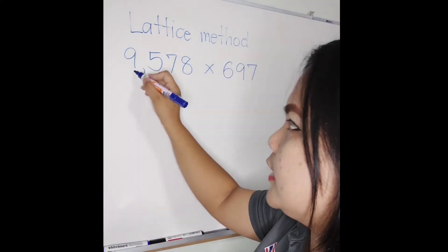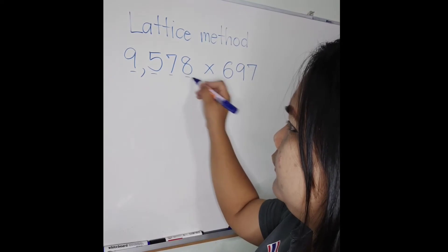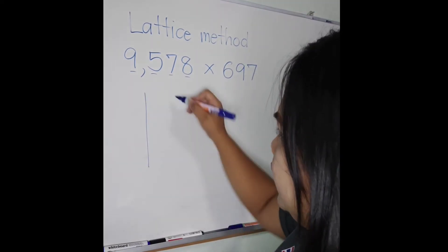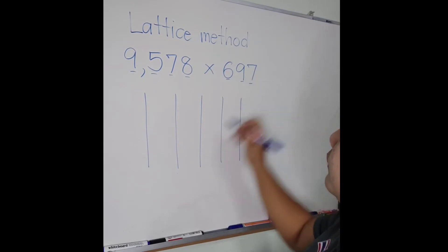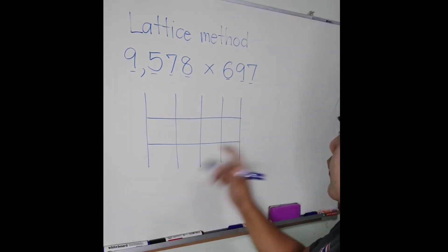Let's count: 1, 2, 3, 4. Make four columns. One digit here, 1, 2, 3, three rows: 1, 2, and 3.